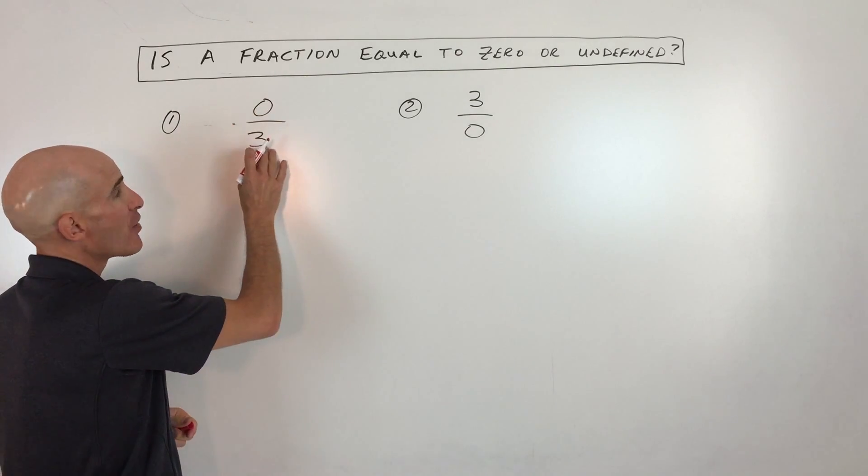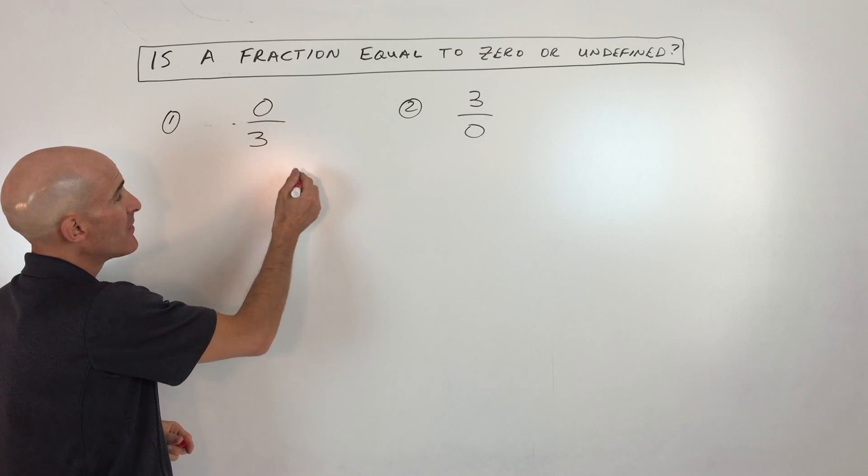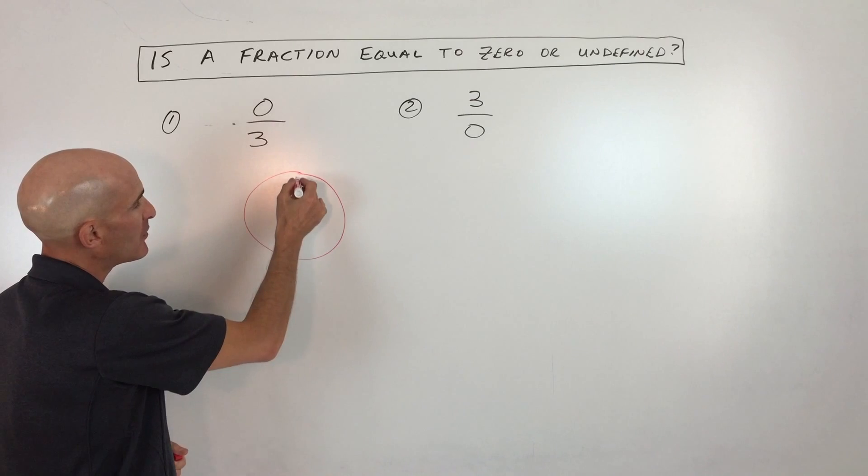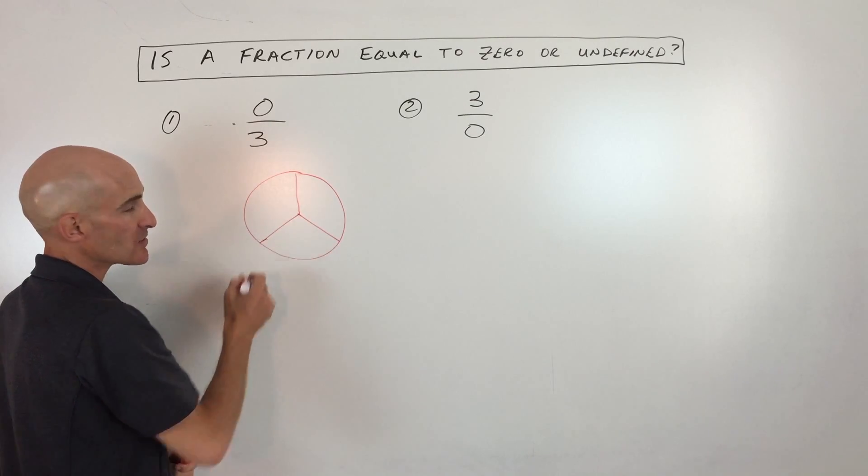When you divide something into threes or thirds, think about maybe like a pizza. If you have a pizza and you say, I want to divide this into three equal slices.